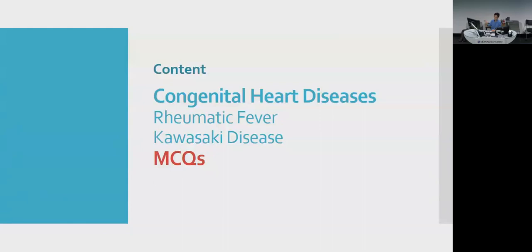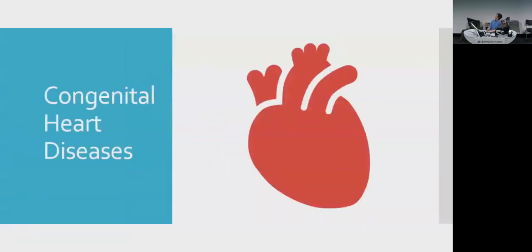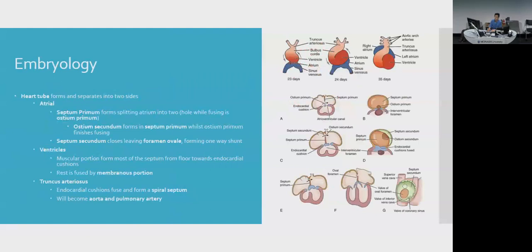We'll start with congenital heart diseases. I tried to summarize embryology into two slides. At a very basic level, you should know that the heart forms a heart tube — one long tube — with the venous end and atrium at the bottom and the truncus arteriosus at the top, which eventually becomes the aorta and pulmonary artery. It then twists on itself to give the classic heart shape.